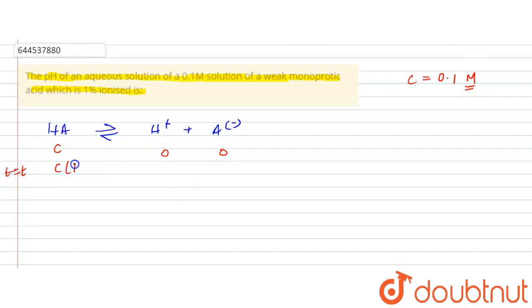Now after time t equals t, it will be C(1 - alpha), where alpha is the degree of ionization or dissociation. So alpha is degree of dissociation. It will be C(1 - alpha) and this will be C·alpha and it will be C·alpha.